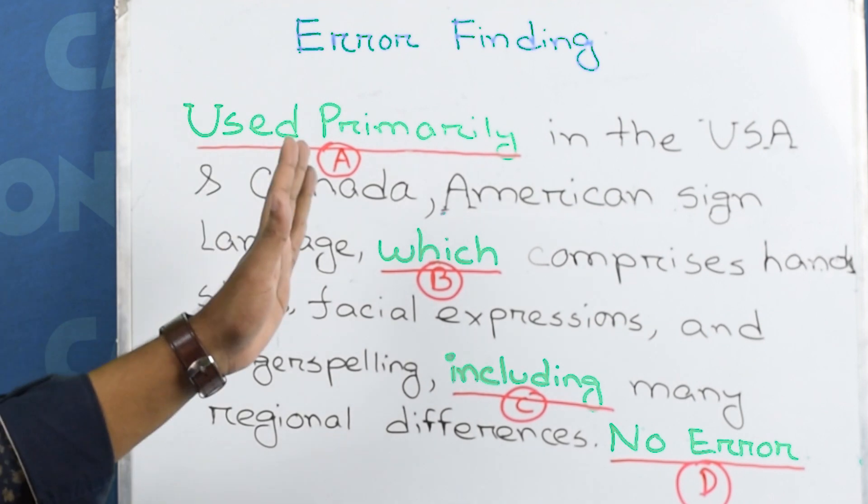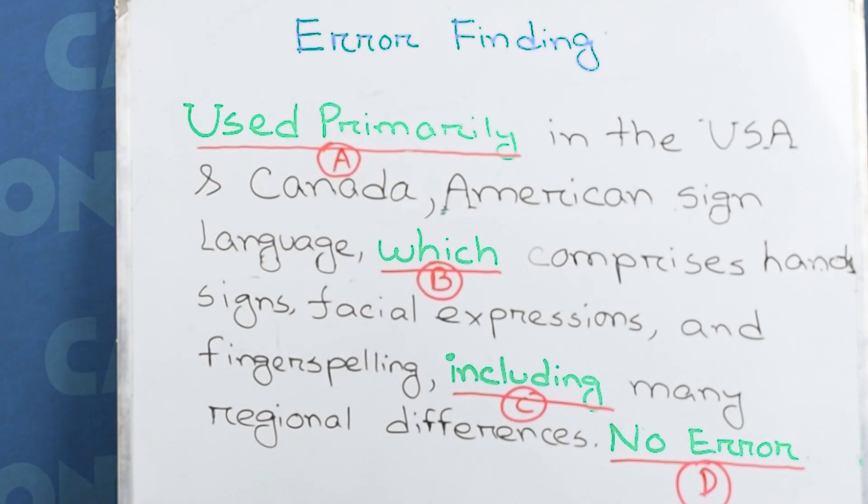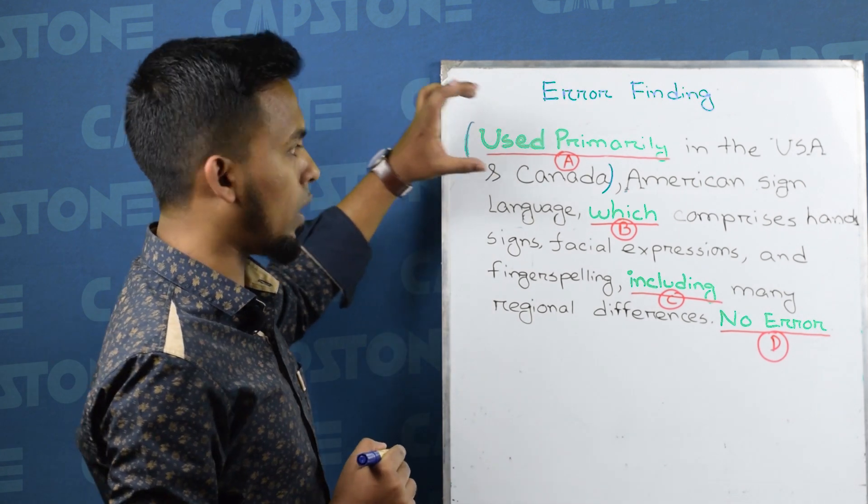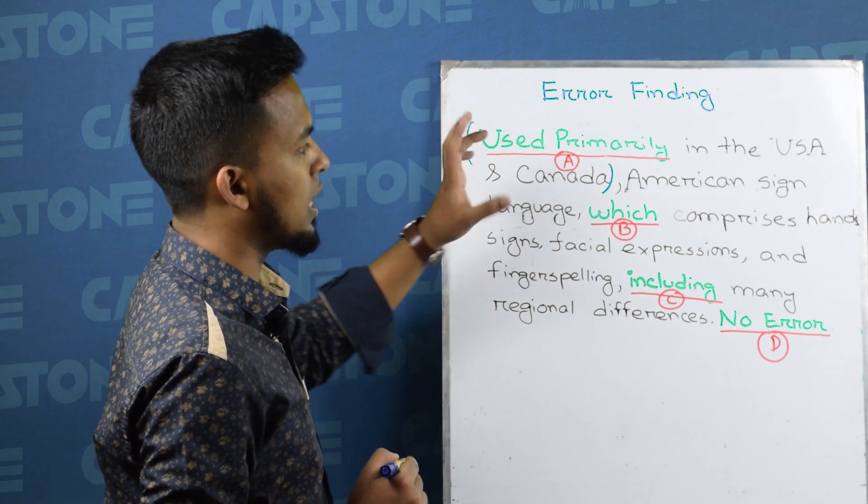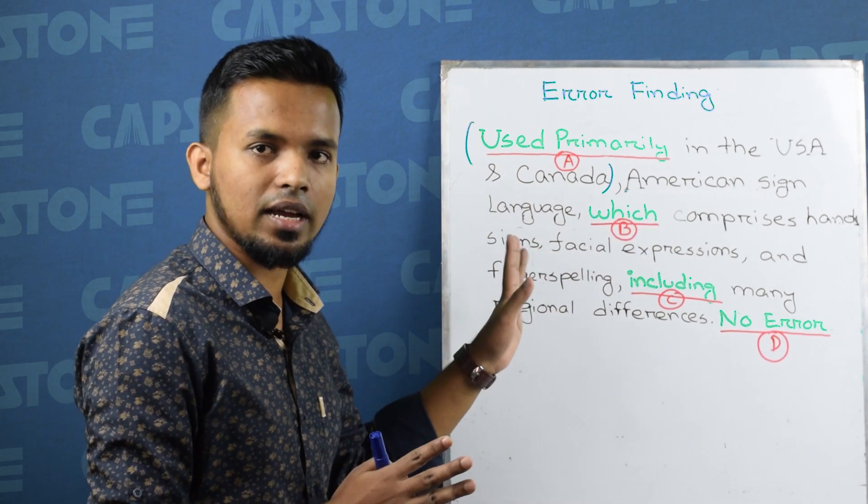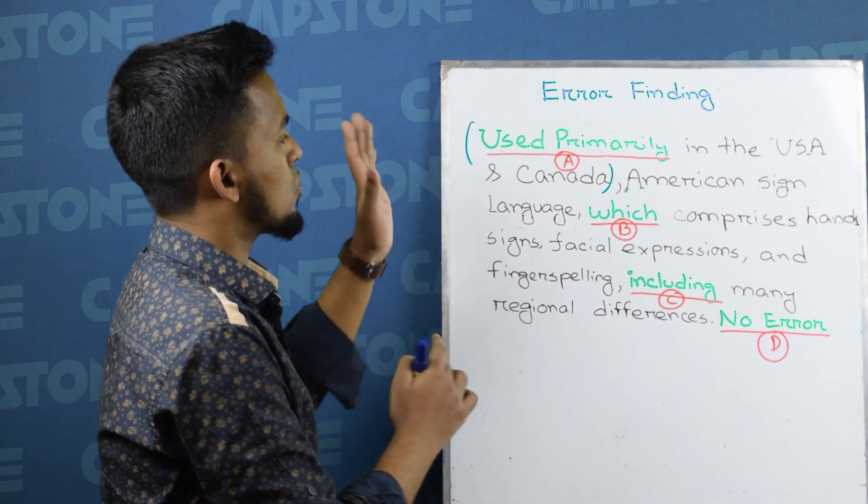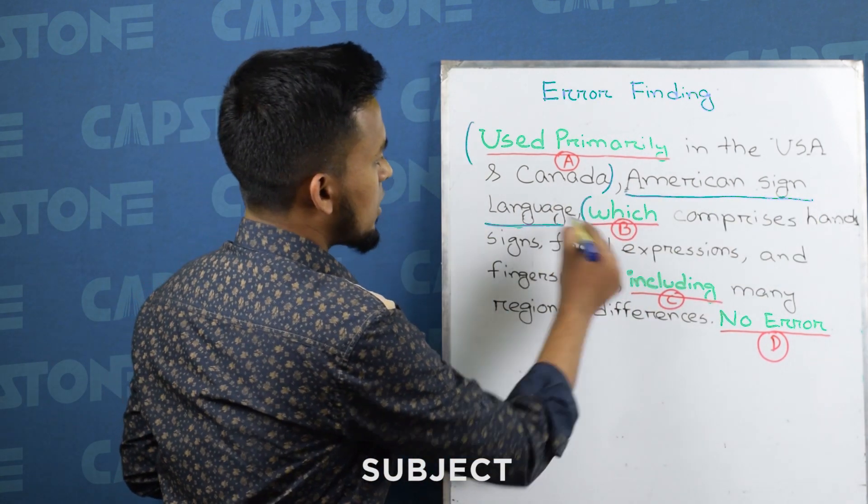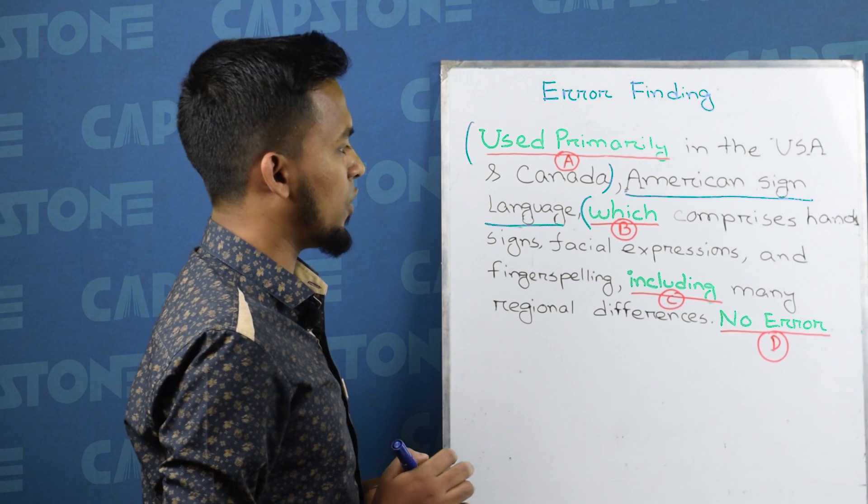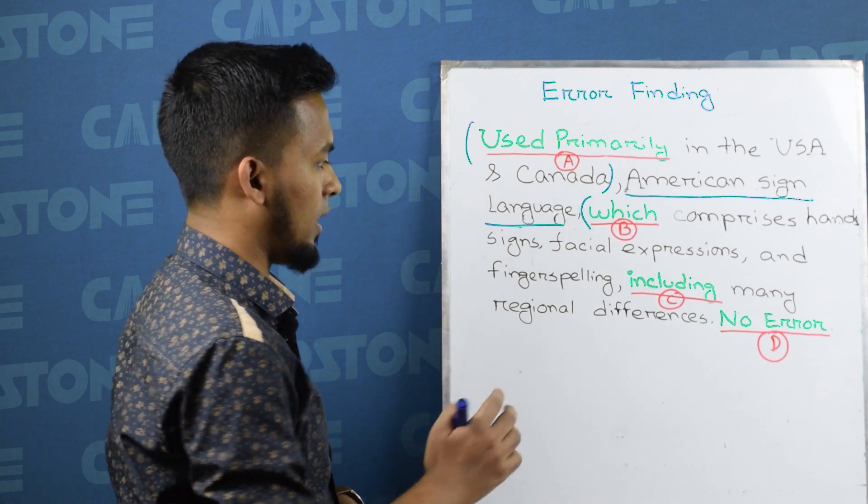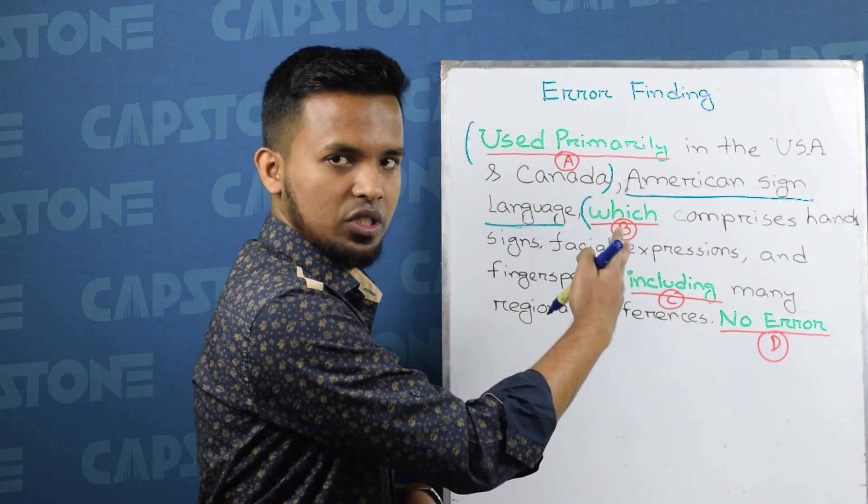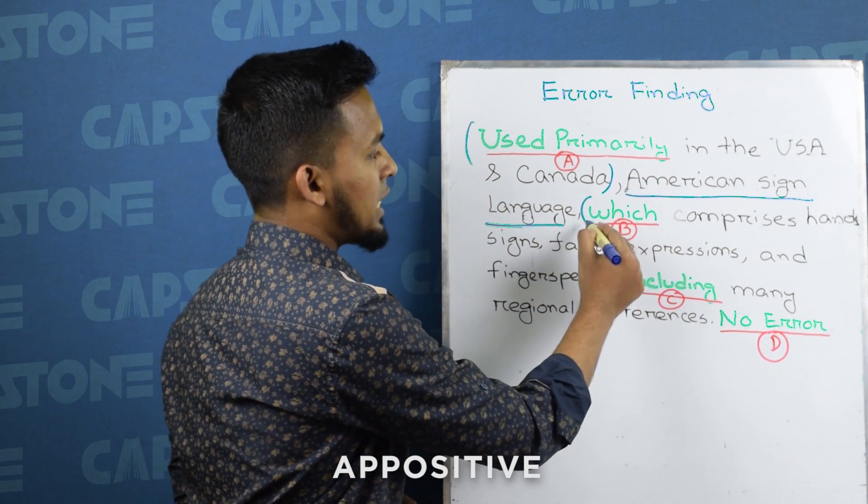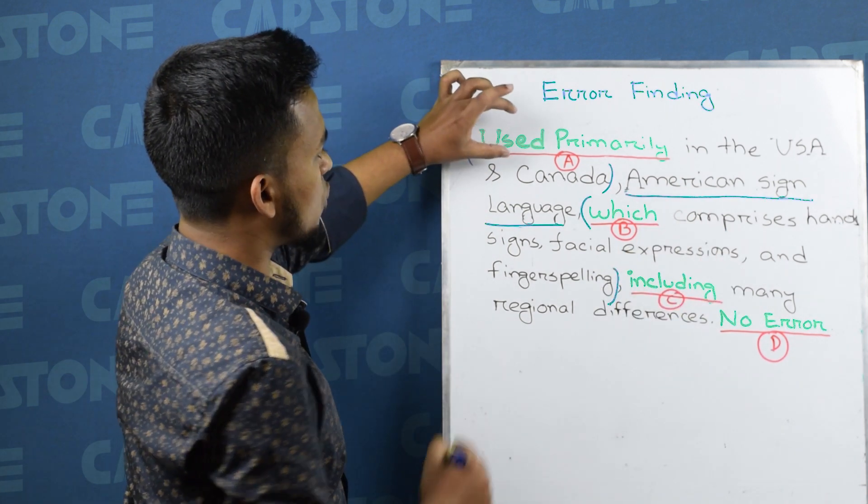The sentence says it is used primarily in the USA and Canada. American Sign Language is the subject, which comprises hand signs, facial expressions, and finger spelling. The language includes many regional differences, so our answer is right here.